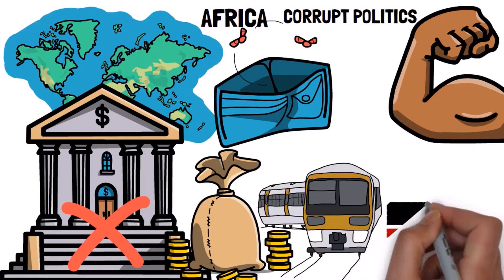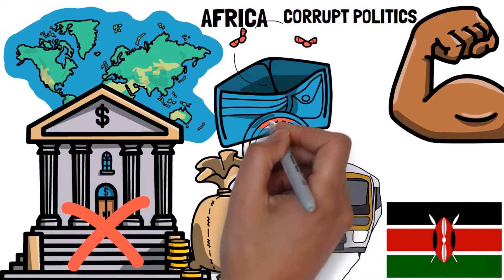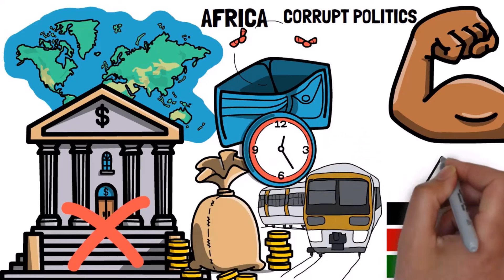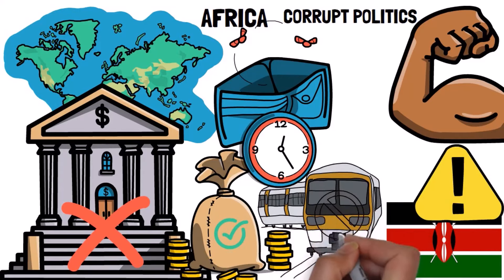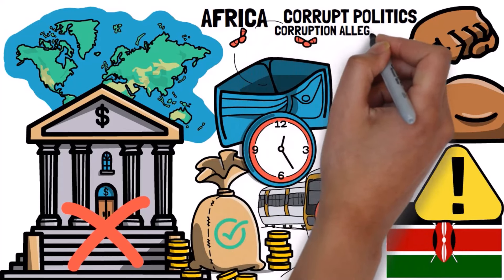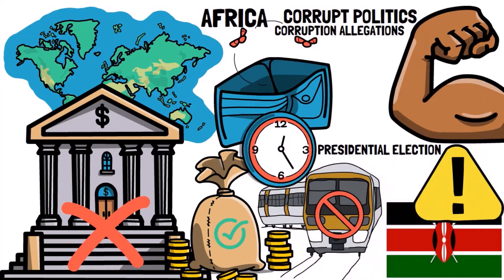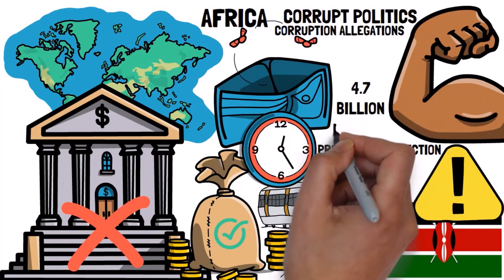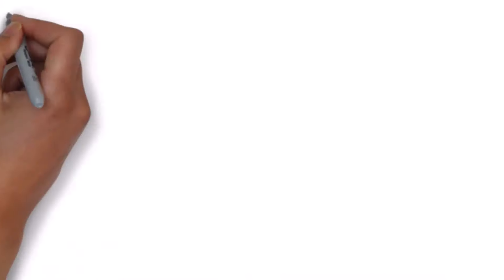For example, China wanted to build a super expensive train system in Kenya that was supposed to make travel faster. But it ran into problems. The railway ended up costing a lot of money to operate, and Kenya had to stop the Chinese company from managing it. There were so many corruption allegations that it became a big issue in the Kenyan presidential election. Now, Kenya owes China $4.7 billion if they want to finish the project.